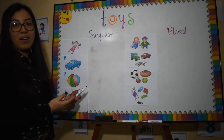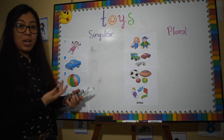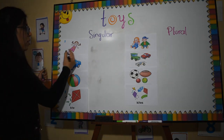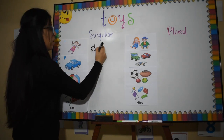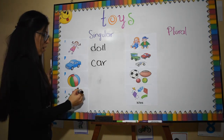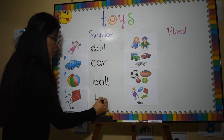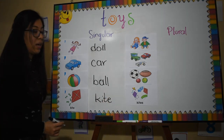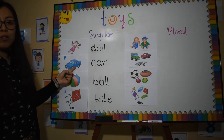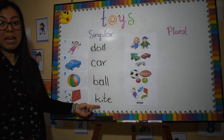Okay guys, so here I have some of the toys that you saw in my toy box, but where are they? Acá tenemos algunos de los elementos que ustedes vieron en mi caja de juguetes, pero ¿qué son? So here we have: doll, car, ball, and kite. Entonces chicos, aquí tenemos que muñeca se dice doll, carro se dice car, pelota se dice ball, y cometa se dice kite.